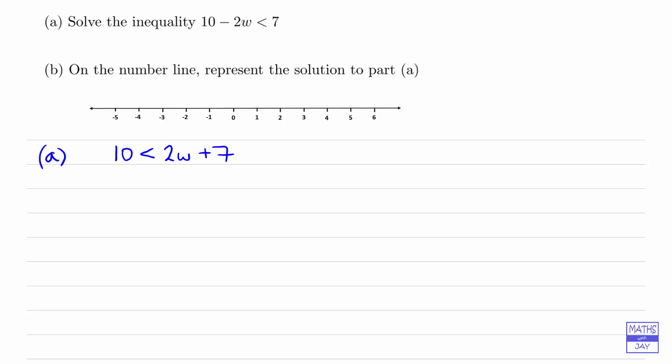And really, we could think of this as saying 2w plus 7 is greater than 10, so we could write it like that. It's kind of like we're swapping the left and right-hand sides around, but we need to make sure we change the direction of the inequality when we do that. So we've got 2w plus 7 is greater than 10. And now that's a much easier problem to solve.